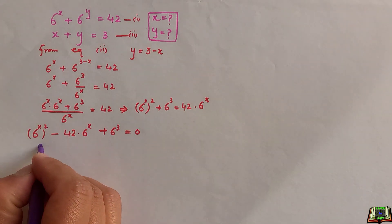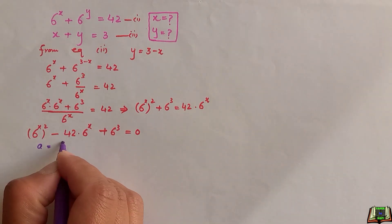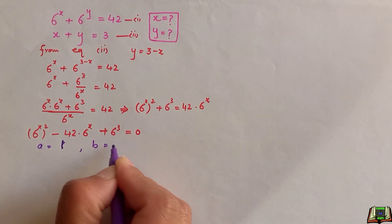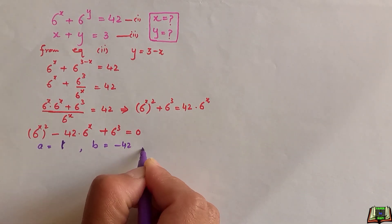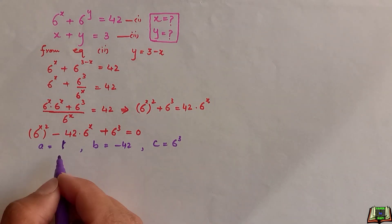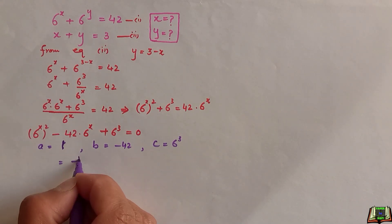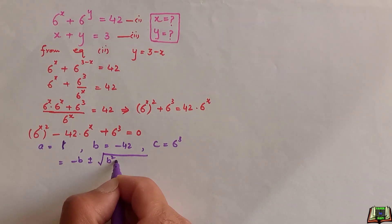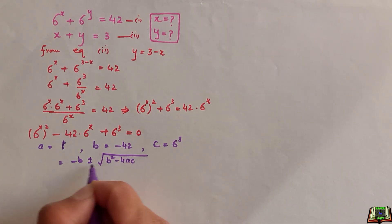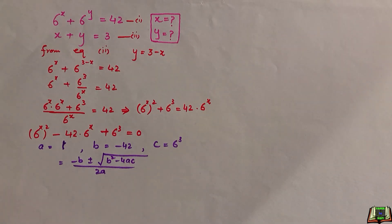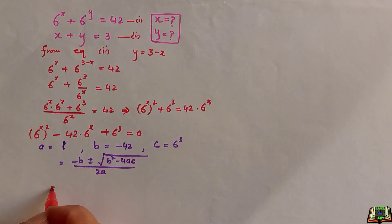In this quadratic equation, a is equal to 1, b is equal to minus 42, and c is equal to 6 to the power 3. The quadratic formula is: minus b plus or minus the square root of (b squared minus 4ac), all divided by 2a. Putting these values in, since b equals minus 42, minus b gives us plus 42.